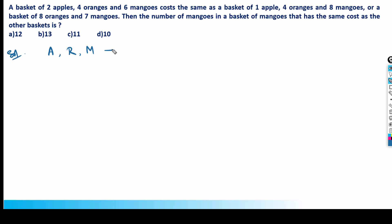A lot of people assume cost of one orange is 'o', but while writing a solution, 'o' and zero look like the same thing, which can be confusing. That's why for orange, take it as 'r'. So cost of one apple is 'a', one orange is 'r', and one mango is 'm'.